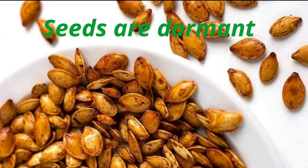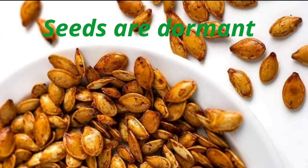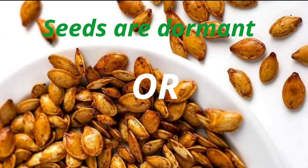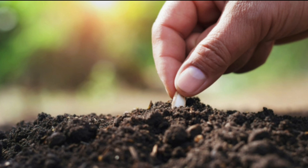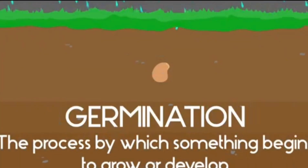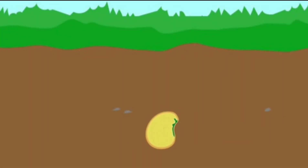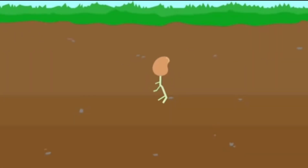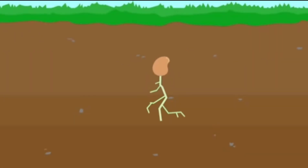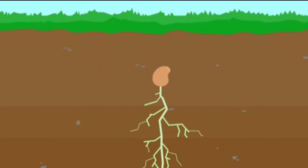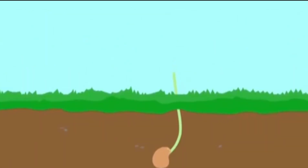Let me take you through it stage by stage. Here are your dried pumpkin seeds. At this point the seeds are dormant, or what we would also say inactive. Once these seeds are planted in soil with the right amount of water, nutrients, and sunlight, seeds become active and they start to produce a positive response towards their environment in the form of growth — and this, my friends, is the process of germination.